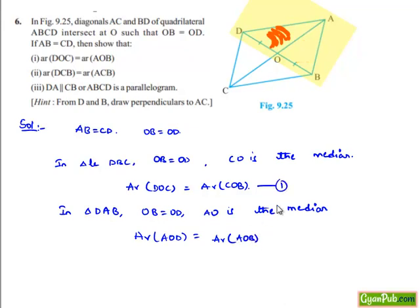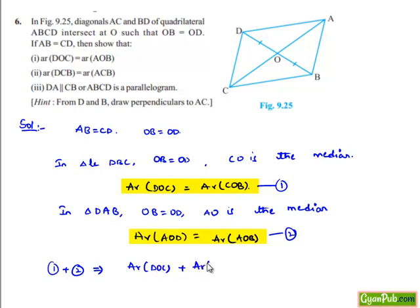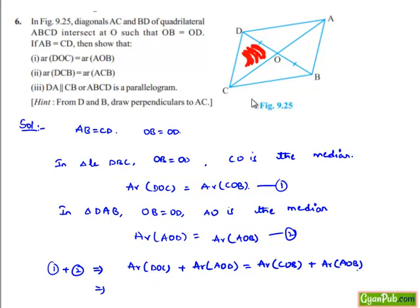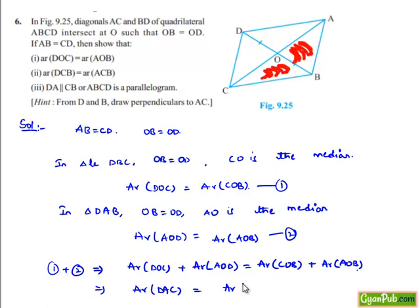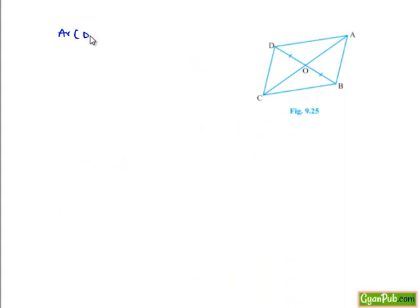Let these be equation number one and equation number two. Adding both equations, we get: area of triangle DOC plus area of triangle AOB equals area of triangle COB plus area of triangle AOB, which is area of triangle ABC. So area of triangle DOC is equal to area of triangle ABC.